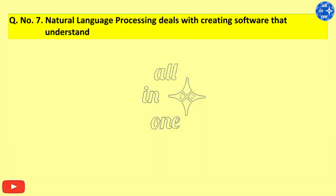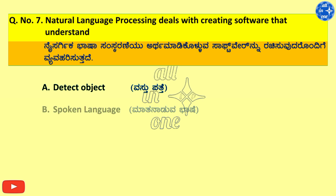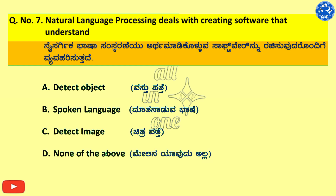Q7. Natural Language Processing deals with creating software that understands. Options: A. Detect Object, B. Spoken Language, C. Detect Image, D. None of the above. Right answer is Spoken Language.